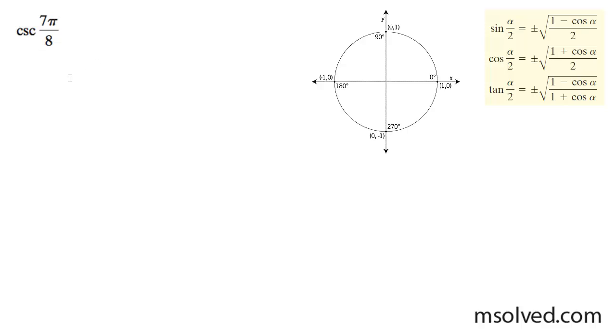Let's find the cosecant of 7π over 8. This is the half angle. If you write this here, this is the half angle of 7π divided by 4.